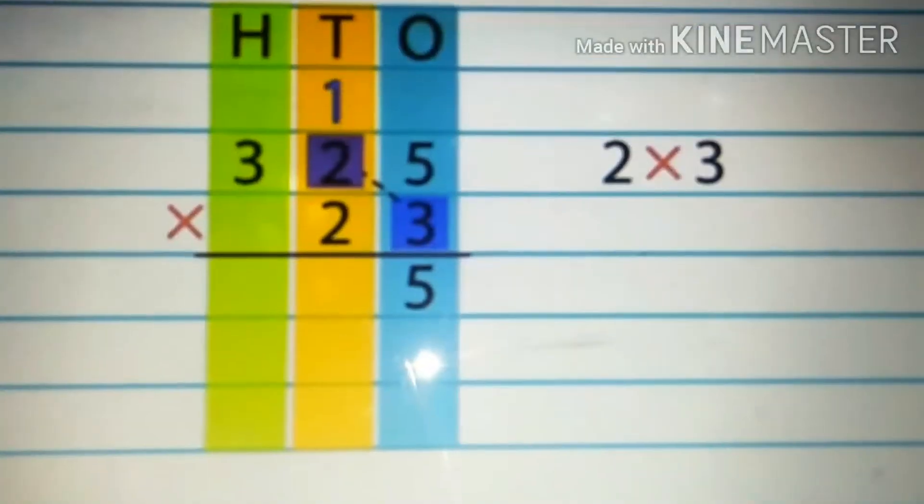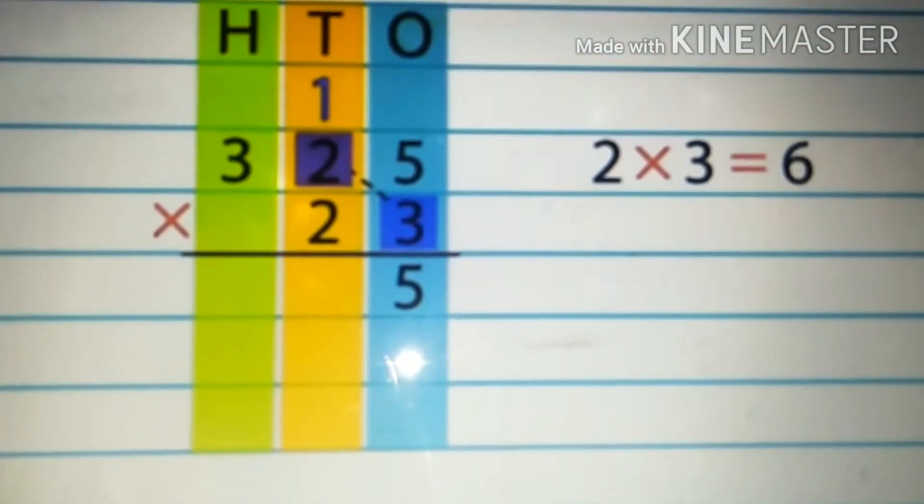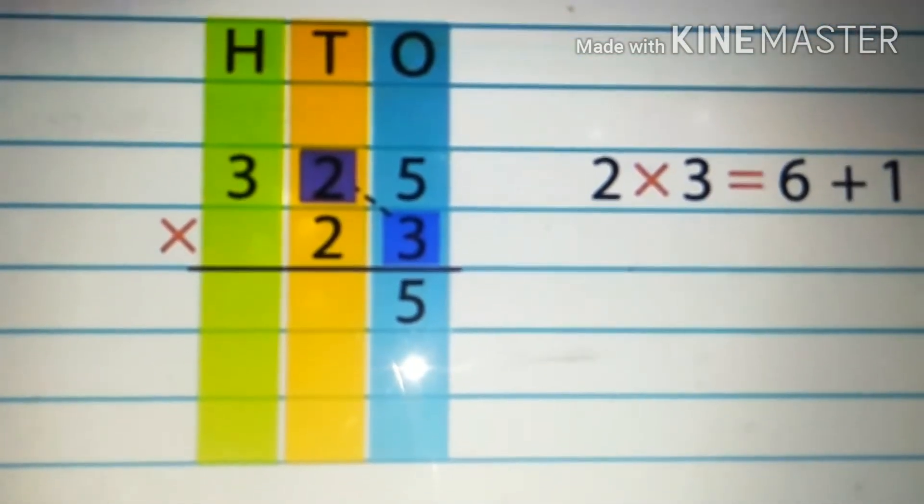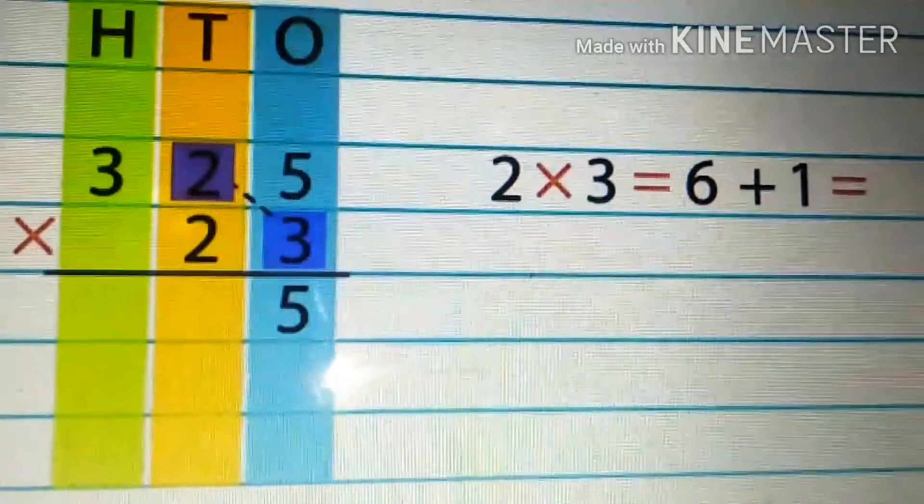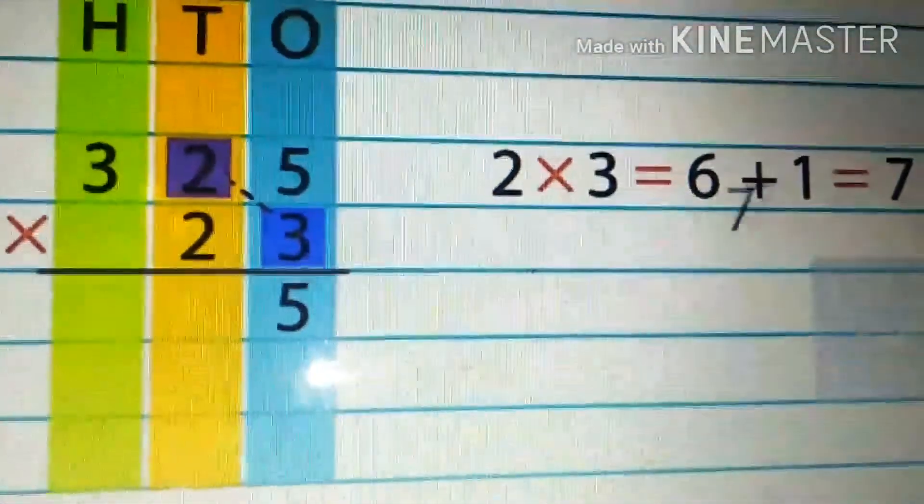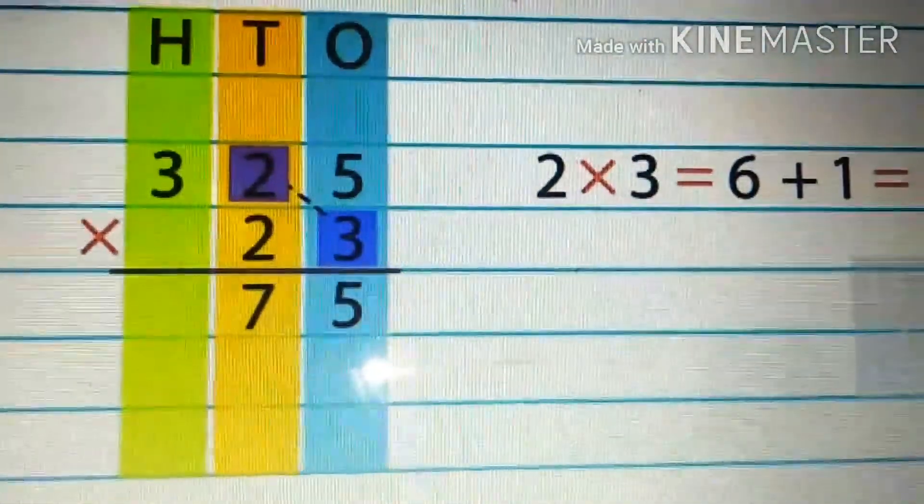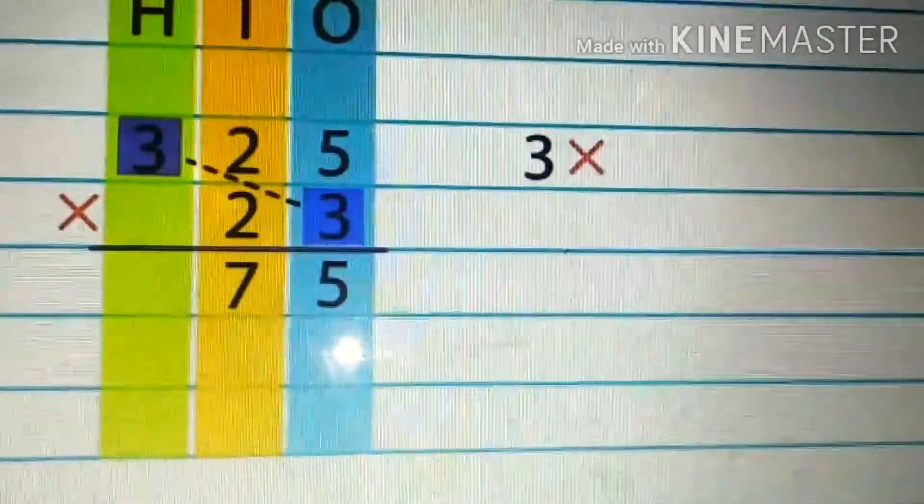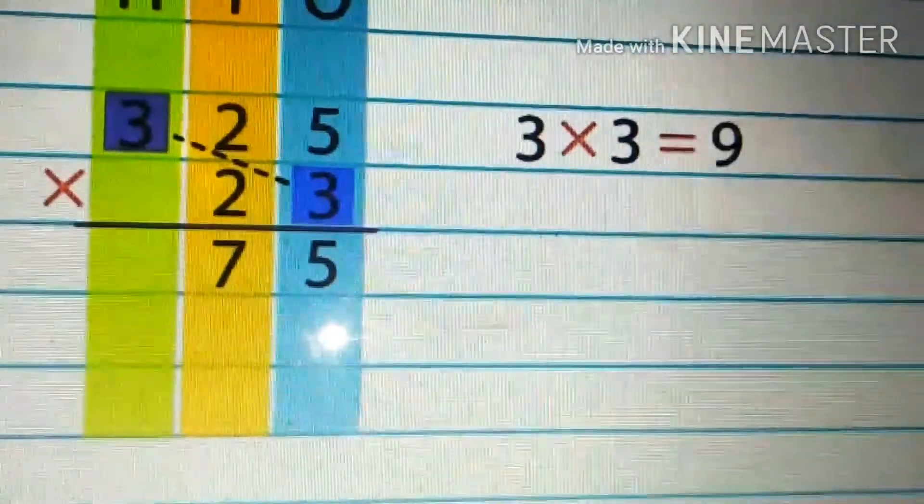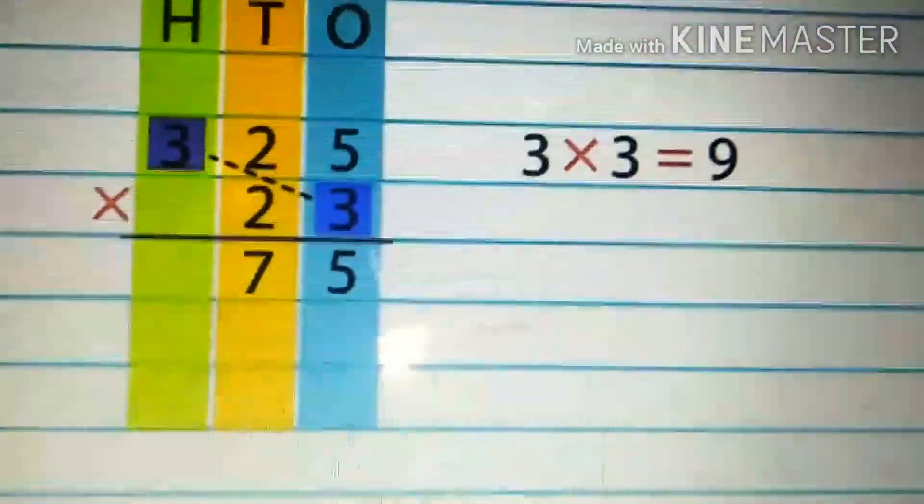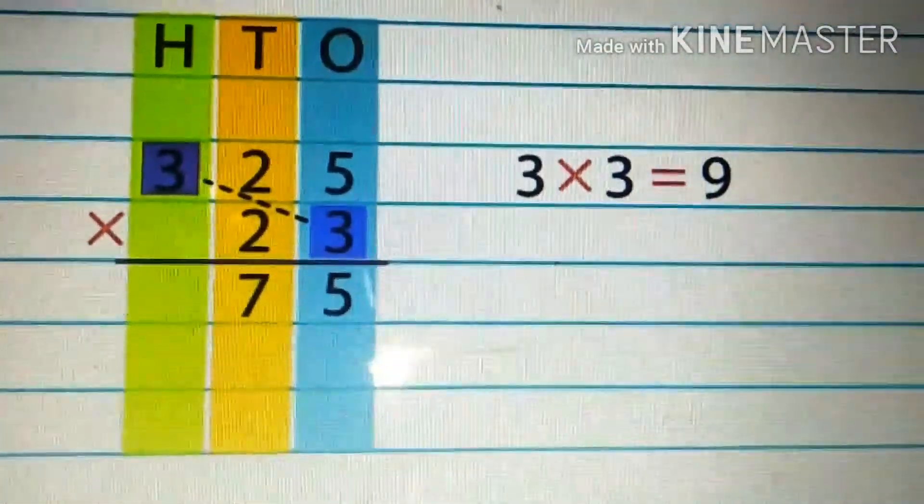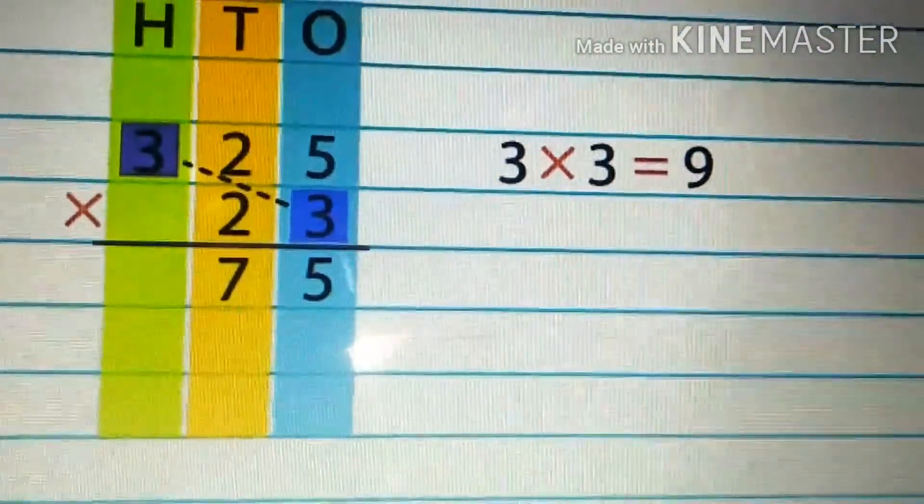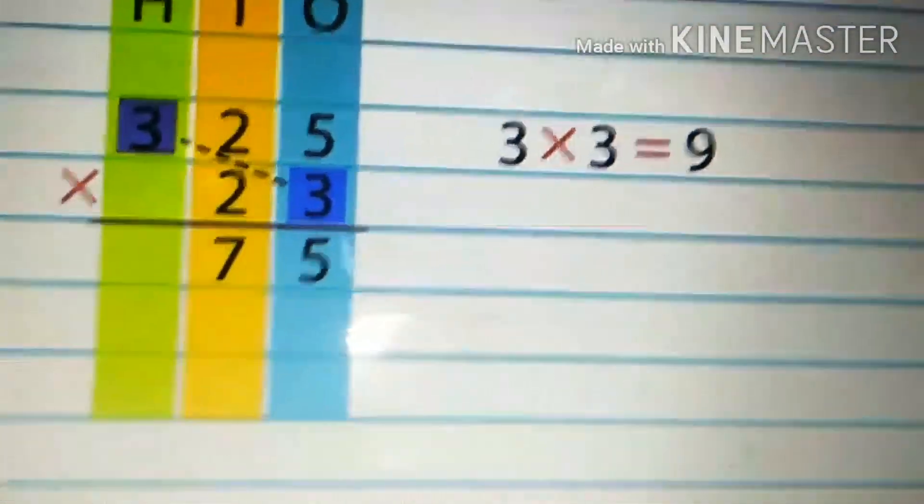We write five in the ones column and carry over one to the tens column. Next, two multiplied by three gives six. Next, we add the one that was carried over to the tens column to six. We get seven, so we write seven in the tens column. Next, three by three gives nine. Since there is no carry over, we directly write nine in the hundreds column.